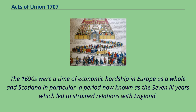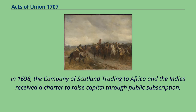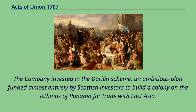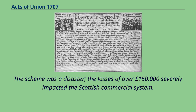The 1690s were a time of economic hardship in Europe as a whole and Scotland in particular, a period now known as the Seven Ill Years, which led to strained relations with England. In 1698, the Company of Scotland trading to Africa and the Indies received a charter to raise capital through public subscription. The company invested in the Darien scheme, an ambitious plan funded almost entirely by Scottish investors to build a colony on the Isthmus of Panama for trade with East Asia. The scheme was a disaster; the losses of over £150,000 severely impacted the Scottish commercial system.